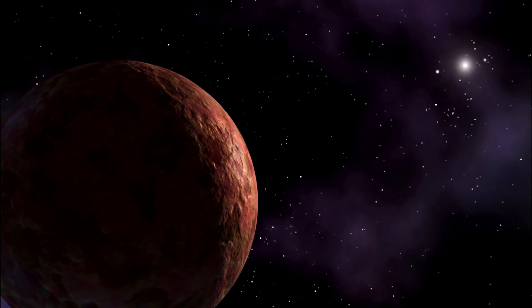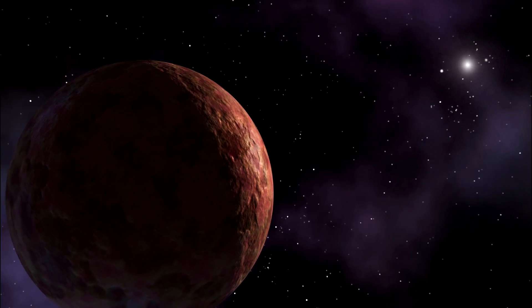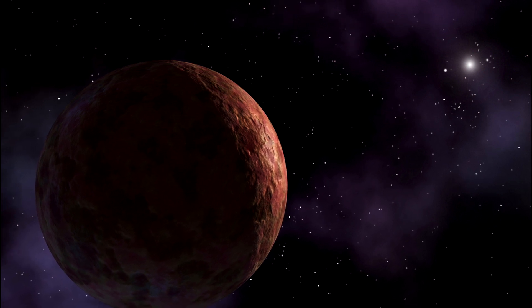That said though, this line is as blurry as any other. Wherever you want to put the edge of our solar system, it's more likely to be a transitional zone than a clearly defined line.